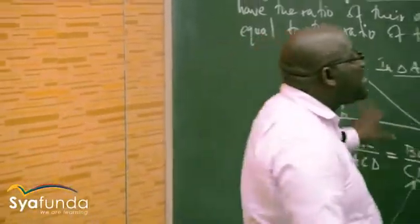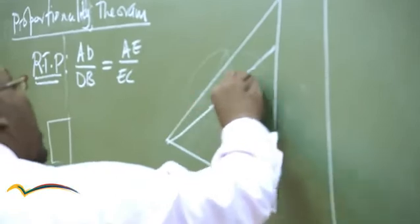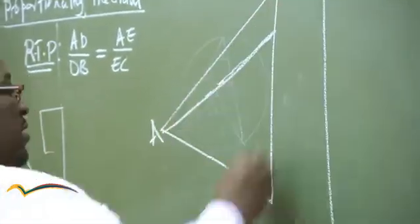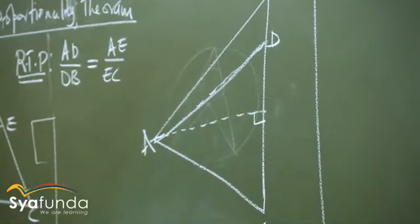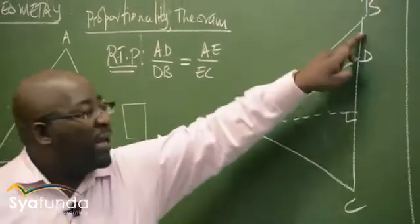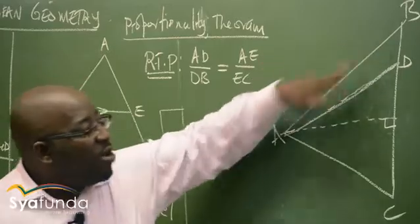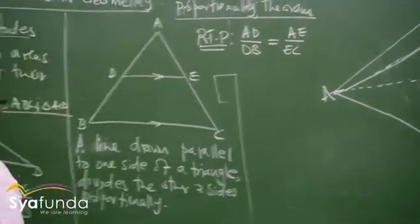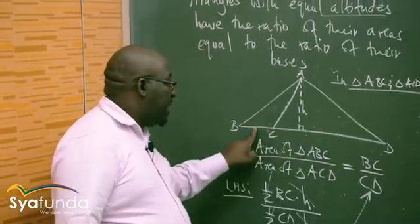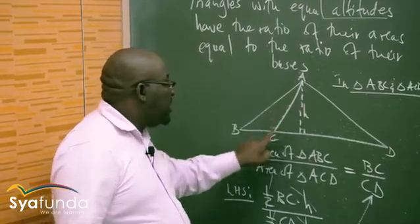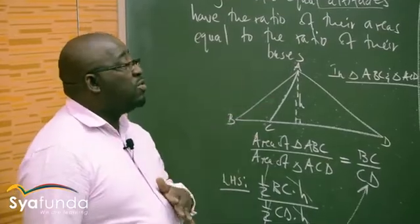The same thing applies to this theorem — even if I take this diagram and put it in a different form. If this is A, B, C, D with an altitude, these two triangles must have equal altitudes. I will know that area of one triangle over area of the other equals that base over that base. Triangles with equal altitudes have the ratio of their areas equal to the ratio of their bases — regardless of the orientation of the diagram.